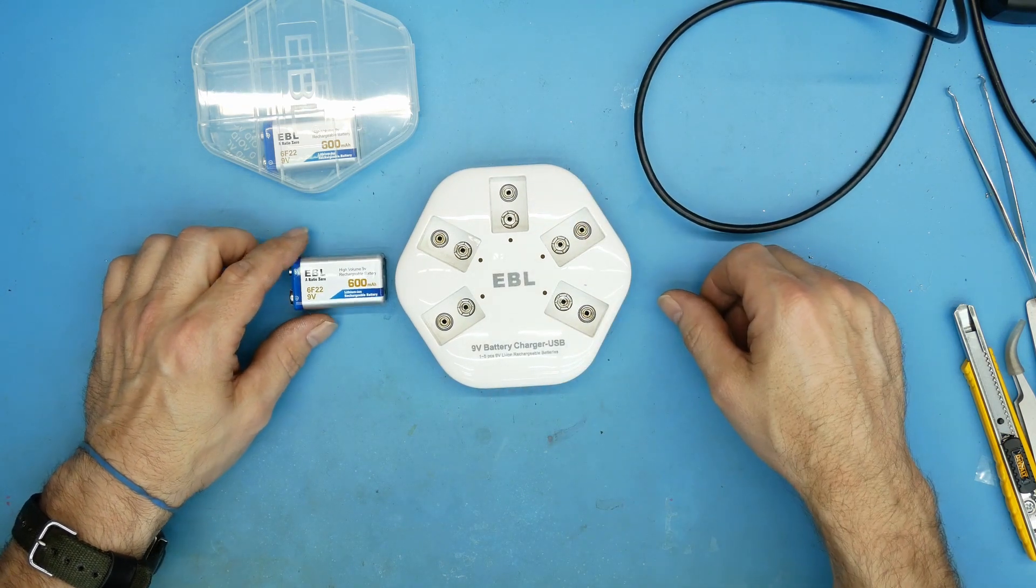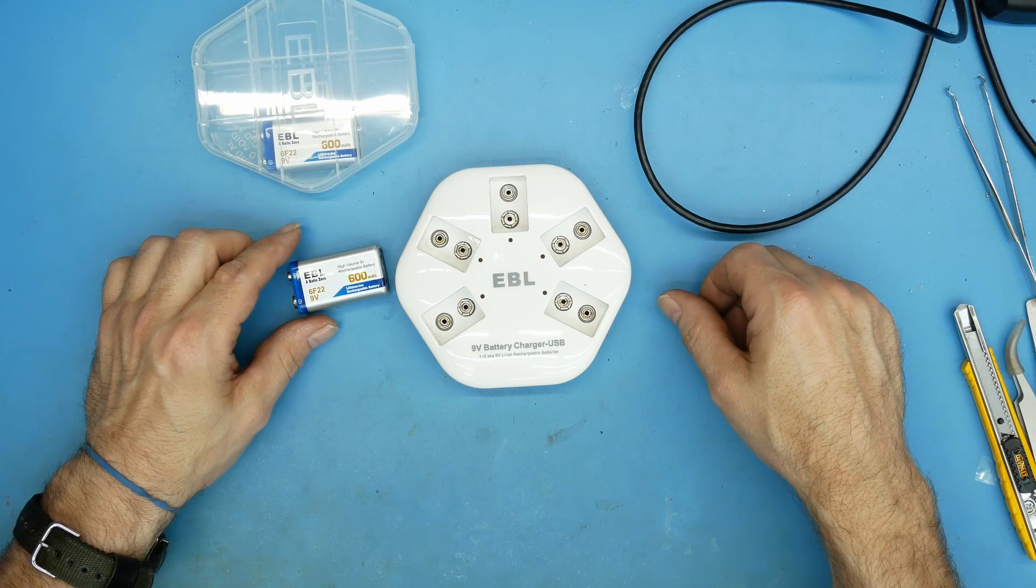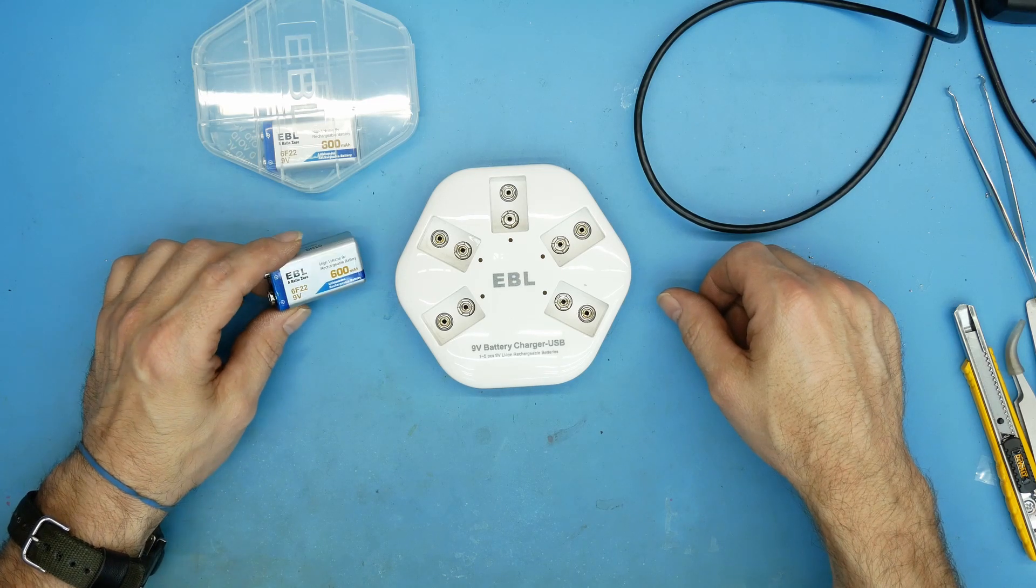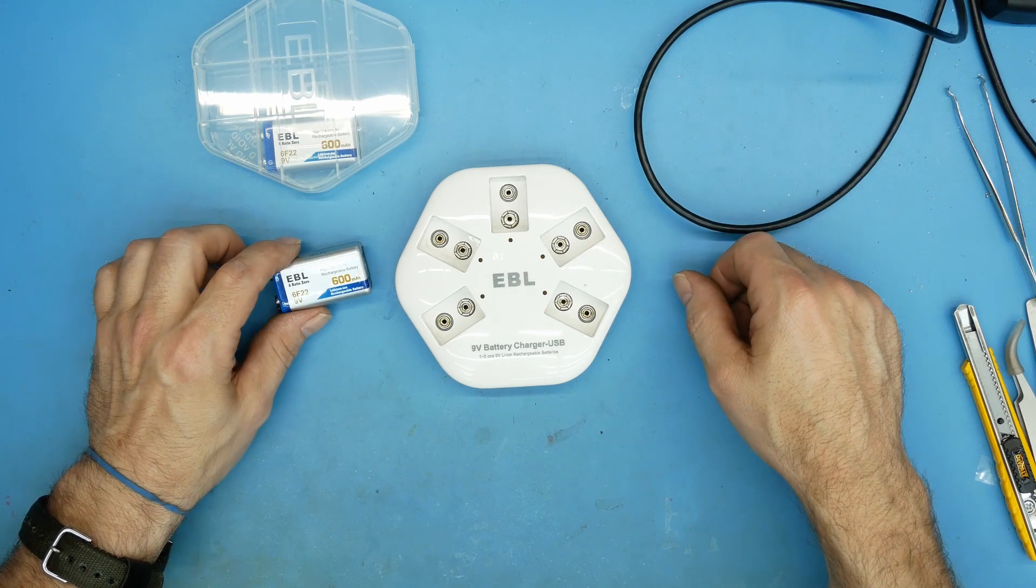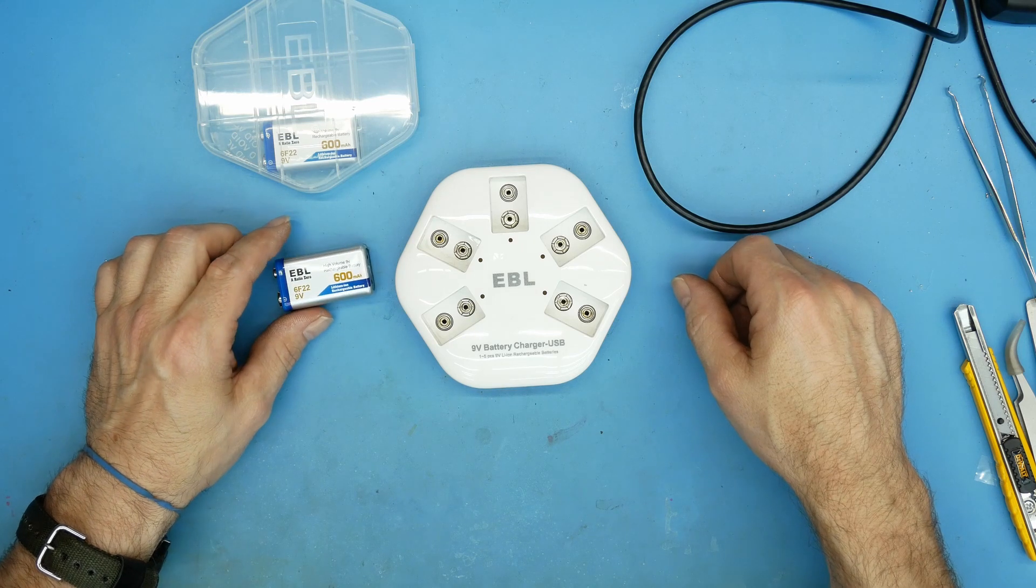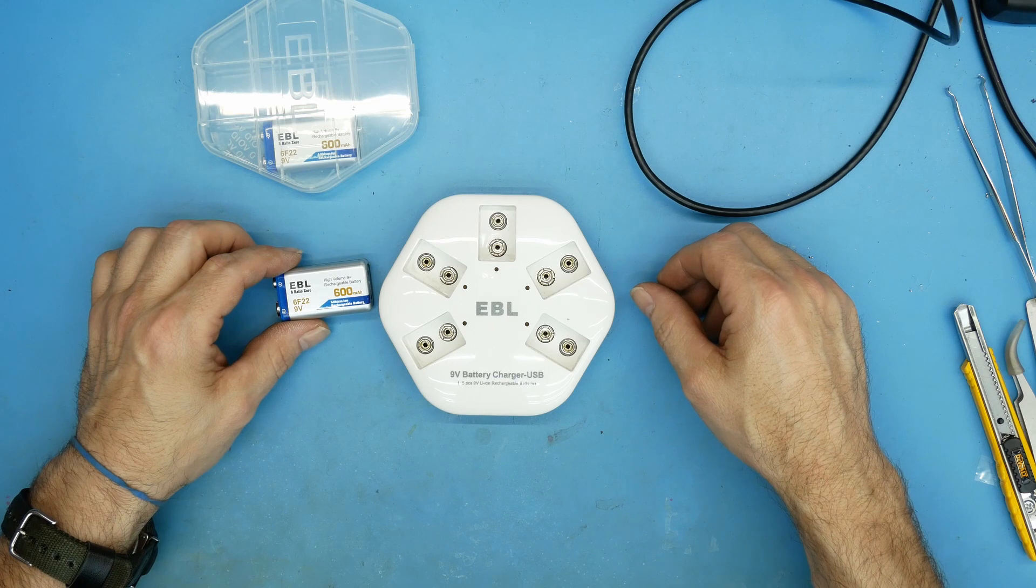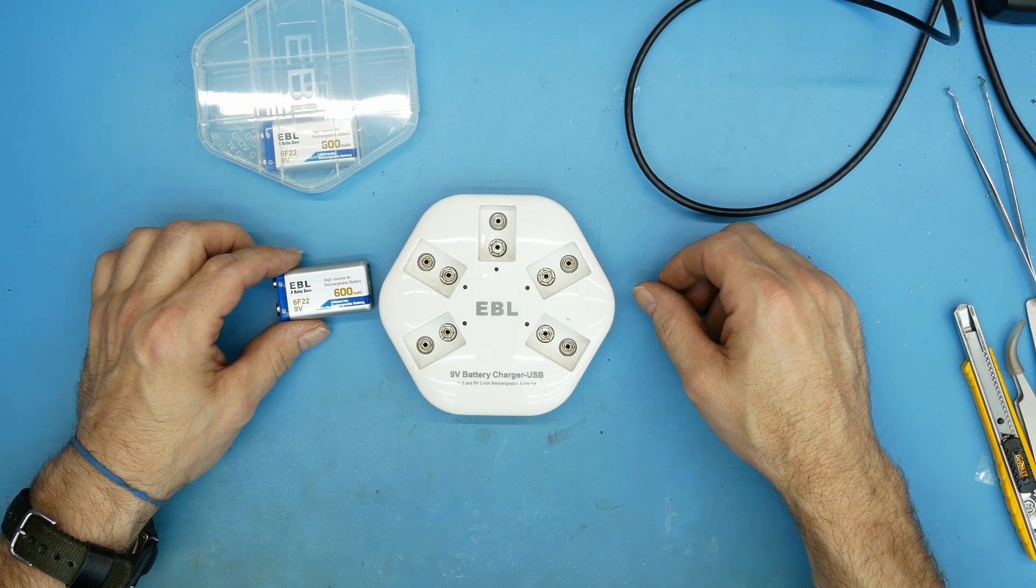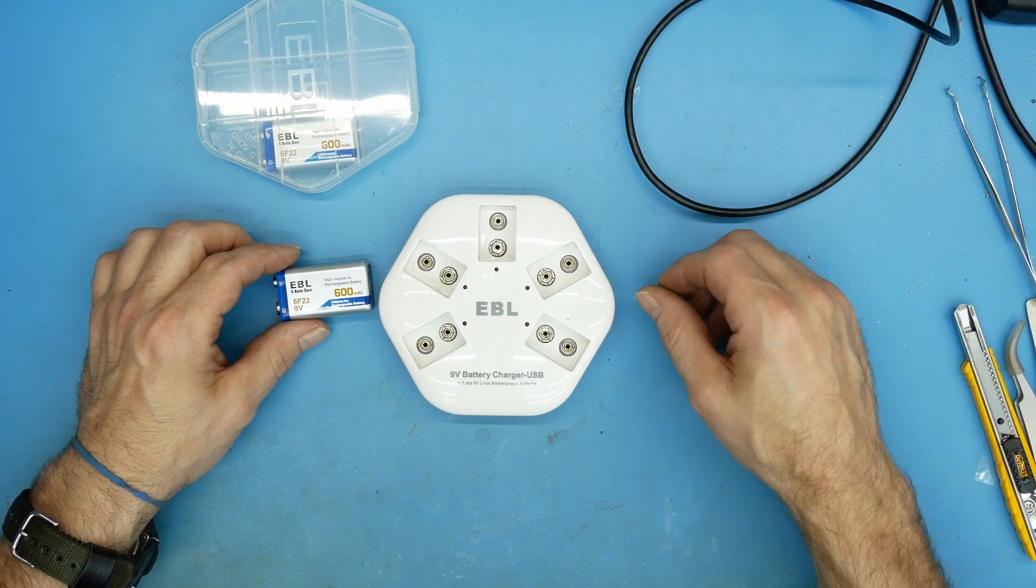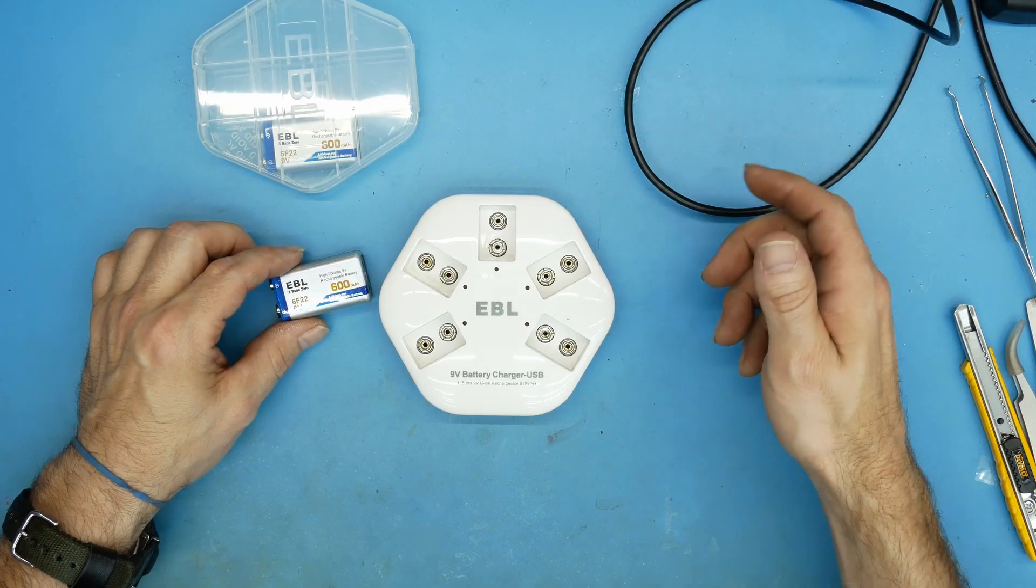I came across these EBLs and they have, just like an alkaline, 600 milliamps. Just so you guys know, I don't have a load tester so I can't put it on a load and see exactly how many milliamps and how much time.